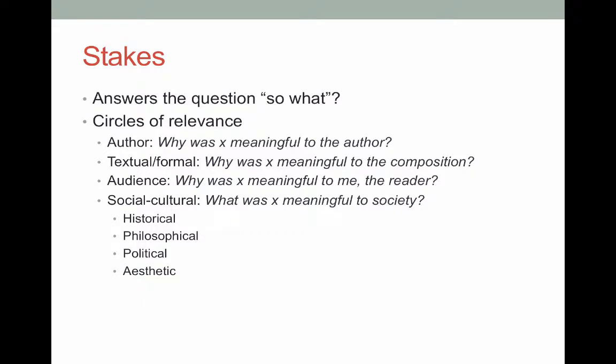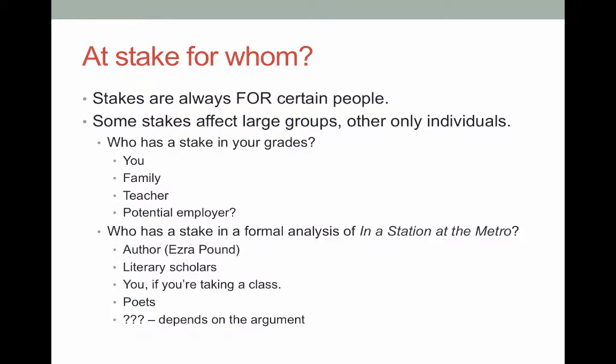Last week we talked about stakes — the answer to the 'so what' question — which has multiple circles of relevance. Certain items can have relevance for an author, for the text or how the text works, for you as the audience, and then at a larger social-cultural level. The stakes you want to shoot for in academic writing are the ones that move across multiple circles of relevance. Stakes always are for a particular group, so when we ask what's at stake, we're also thinking about at stake for whom.